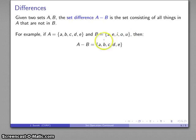A is in B, so I'm going to remove that. E is also in B, so I'm going to get rid of that as well. And so A minus B is just going to be the set {b, c, d}.